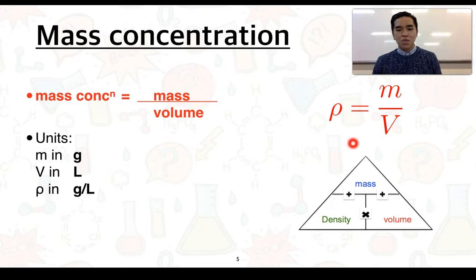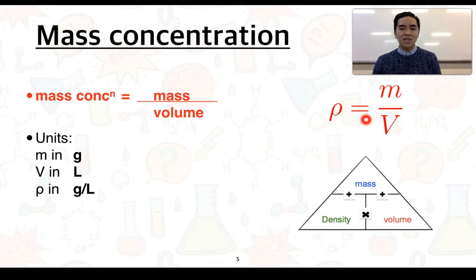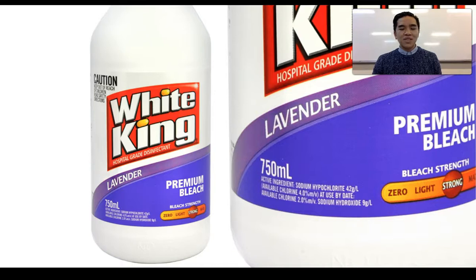To the top right, we've used some abbreviations to represent the formula. So rho equals m over V, or mass concentration equals mass divided by volume.